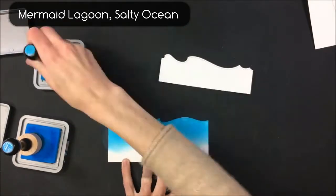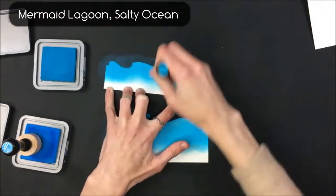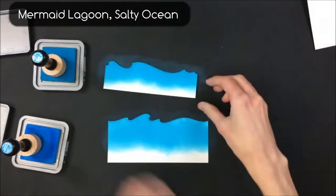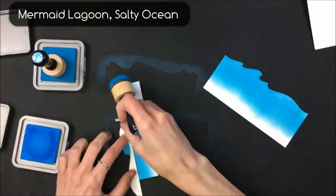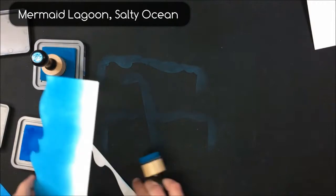So I'm just going to go ahead and do some ink blending on my Ocean Waves pieces and I'm using Distress Oxides in Salty Ocean and Mermaid Lagoon. I'm just blending that on to keep the lighter color, which is Salty Ocean, toward the top and Mermaid Lagoon toward the bottom.